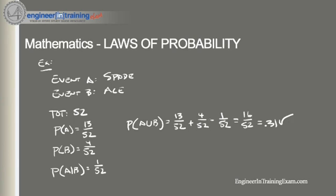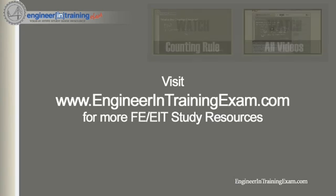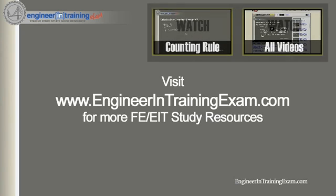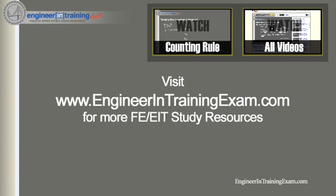We see that the odds are not very favorable, so it was a pretty bad bet. That's all for today — a review of the rules of probability and how we can use those rules to determine probability based on defined events. If you have any questions, hop on over to engineerandtrainingexam.com and send me suggestions, feedback, or just ask a question. I'm here to guide and help you.